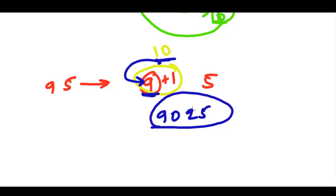So 90 25, 9,025 is the square of 95. So 95 square is 9,025. So you can do this very easily.